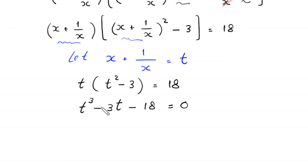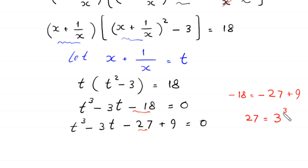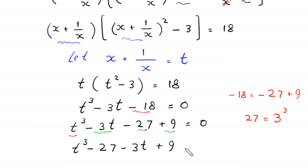Now, this is a cubic equation and is factorable. We write t cubed minus 3t minus 18, where negative 18 can be written as negative 27 plus 9. So, we write this as t cubed minus 27 minus 3t plus 9 is equal to 0.